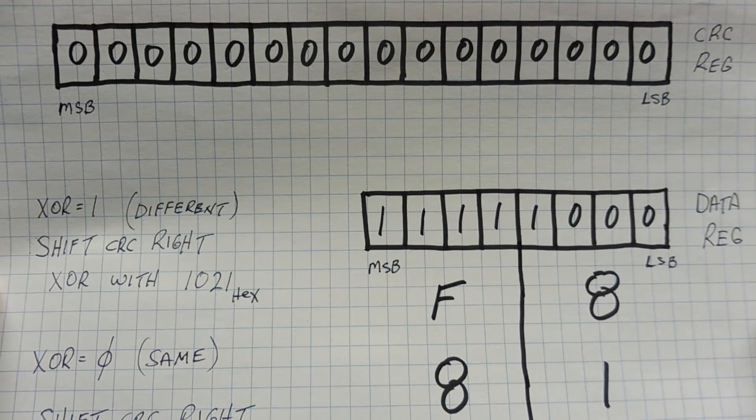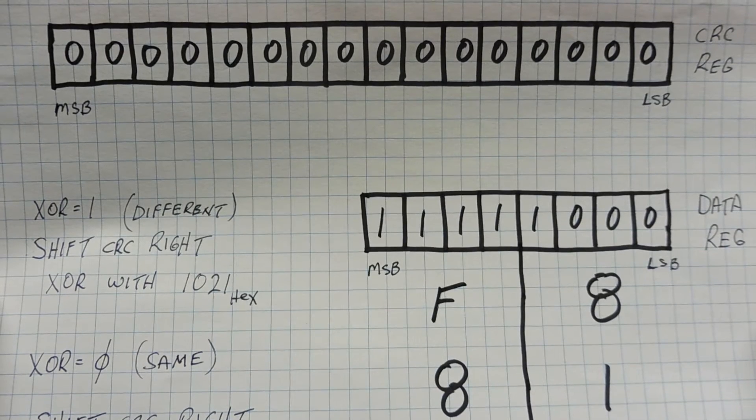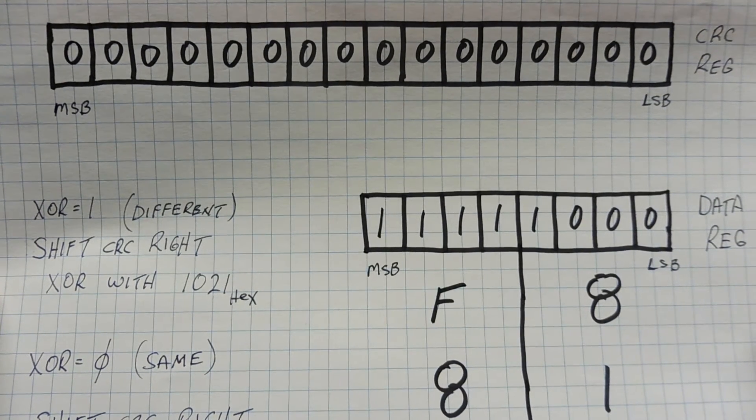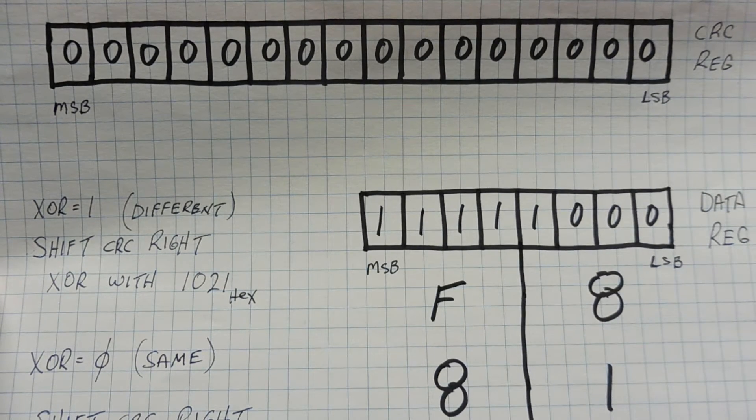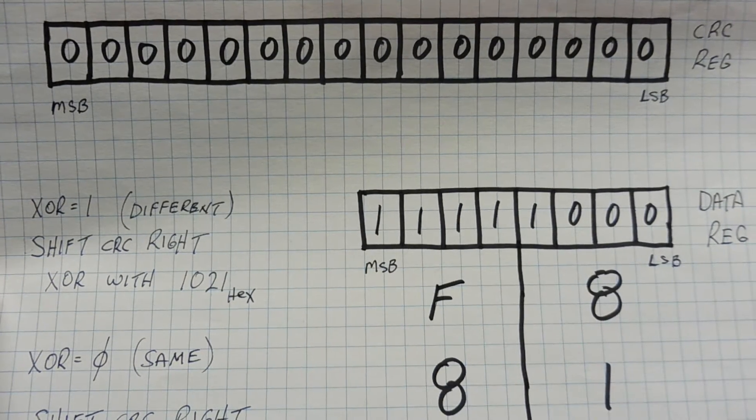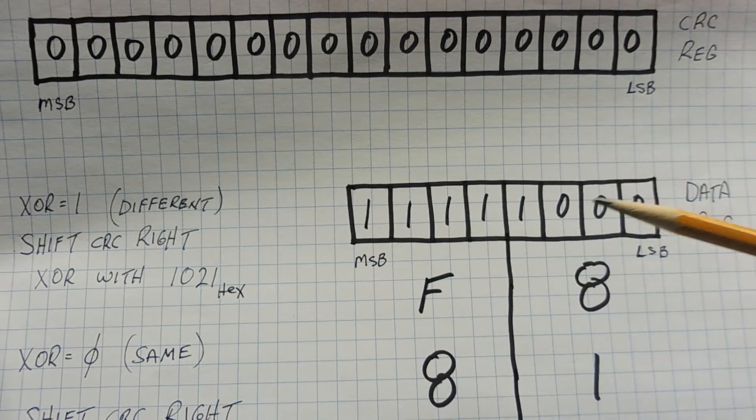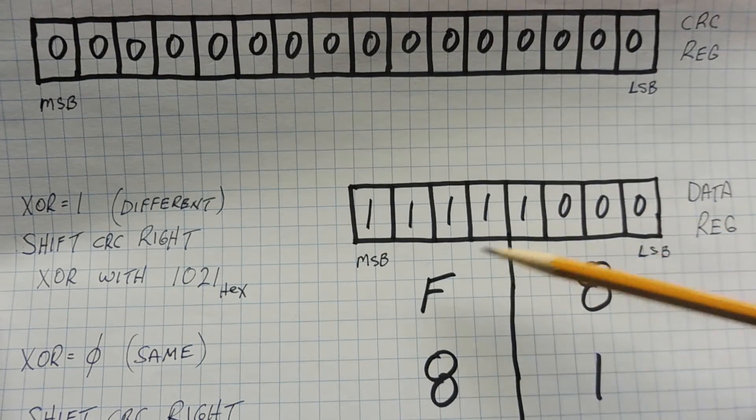Okay, next we're going to look at how we can generate a CRC with a microcontroller. So the first thing we do is we assign a 16-bit register to become our CRC register, which we see here, and initialize it all to zeros. Then we assign an 8-bit register, and it becomes our data register, as you can see here. And we put our first byte into that data register, which is F8.